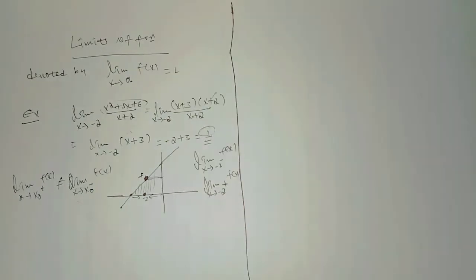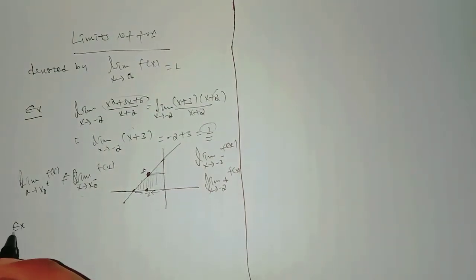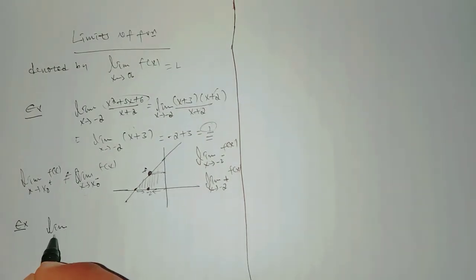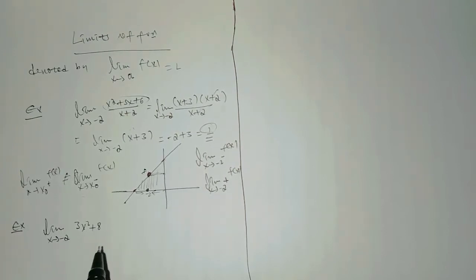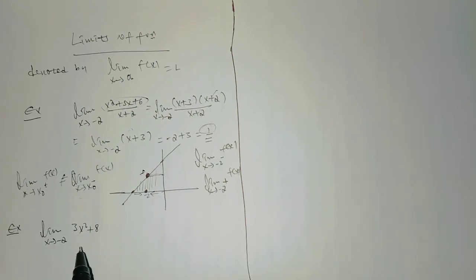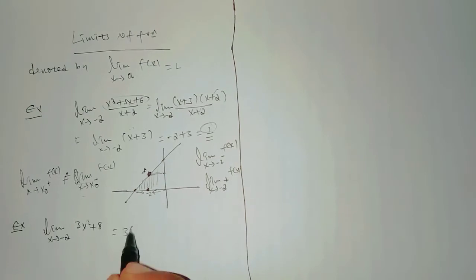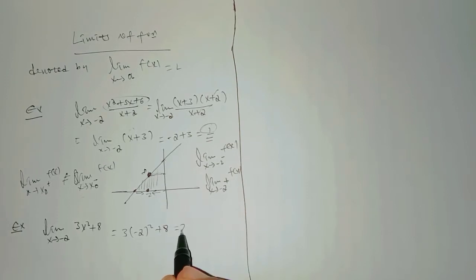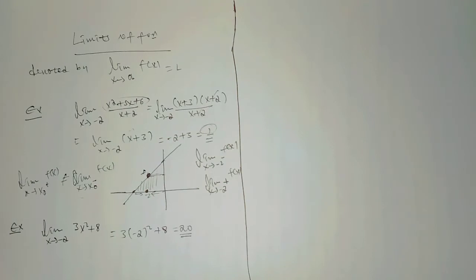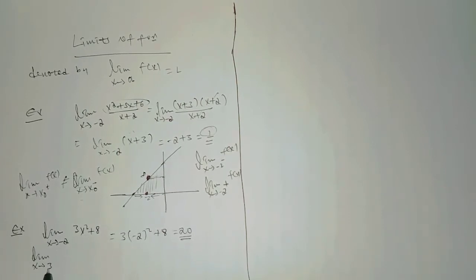Now let's look at two-sided limits with another example: limit x approaches negative 2 of 3x² + 8. Using direct substitution, x equals negative 2: 3 times (negative 2)² plus 8 equals 3 times 4 plus 8, which gives a higher limit value.